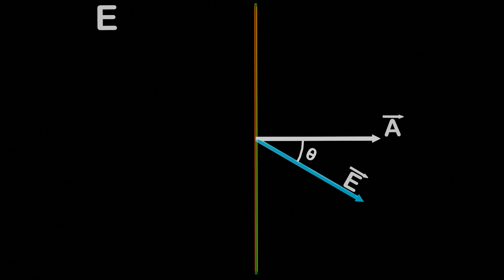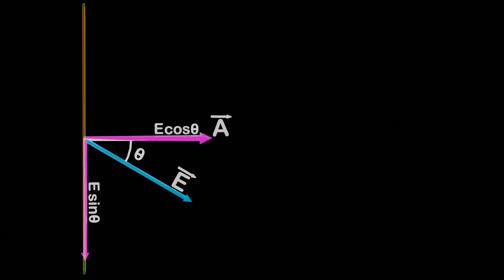Now we have an electric field passing through the plane making an angle theta with the area vector. We know that electric field is a vector quantity that can be split into horizontal and vertical components. Here the horizontal component is E cos theta and the vertical component is E sin theta. In this case, we will only consider the horizontal component E cos theta, as it passes perpendicular through the plane. We don't consider E sin theta because it is not passing through the plane.